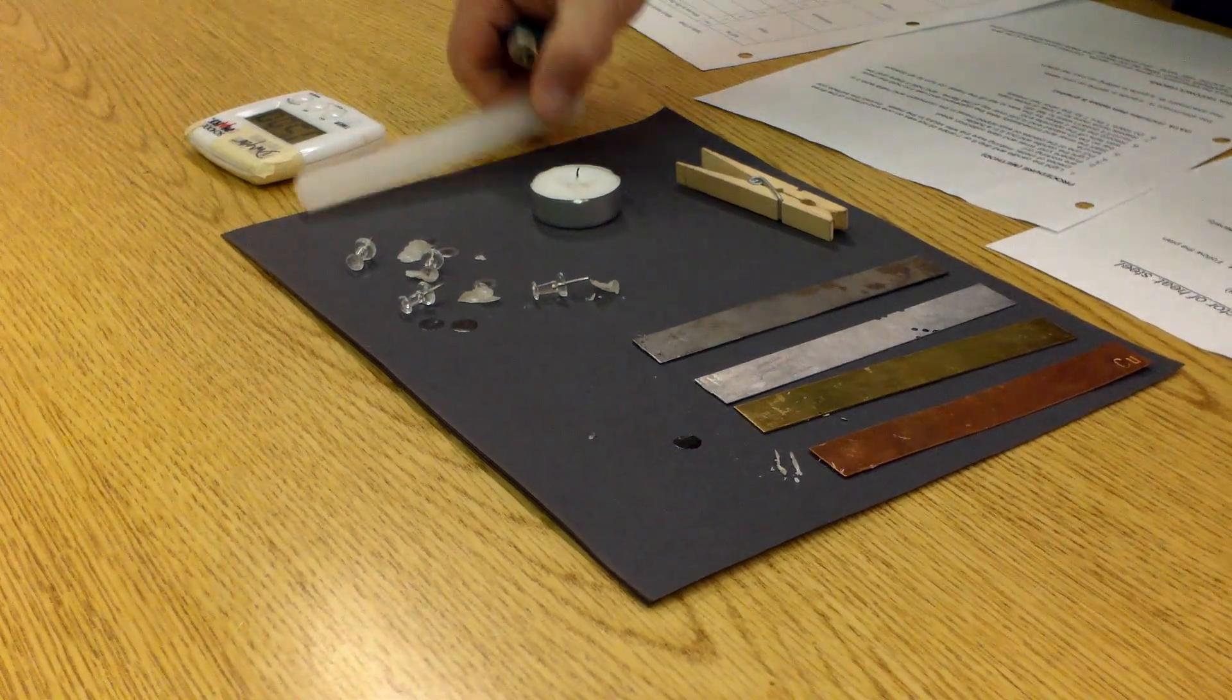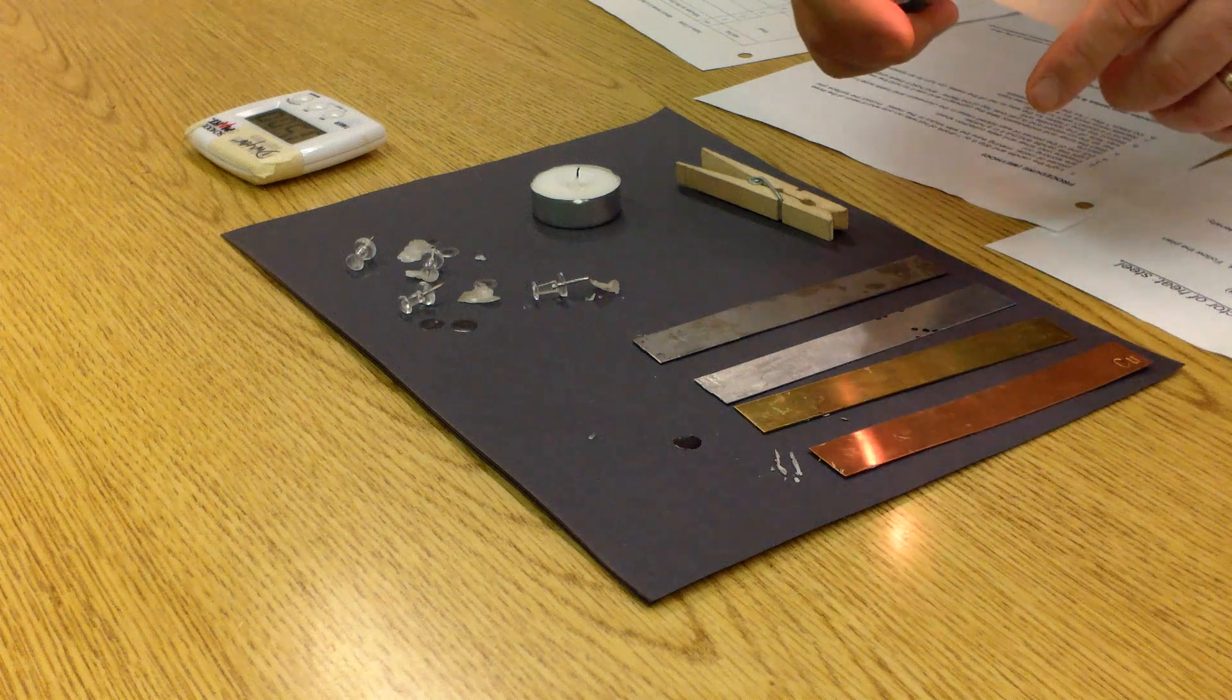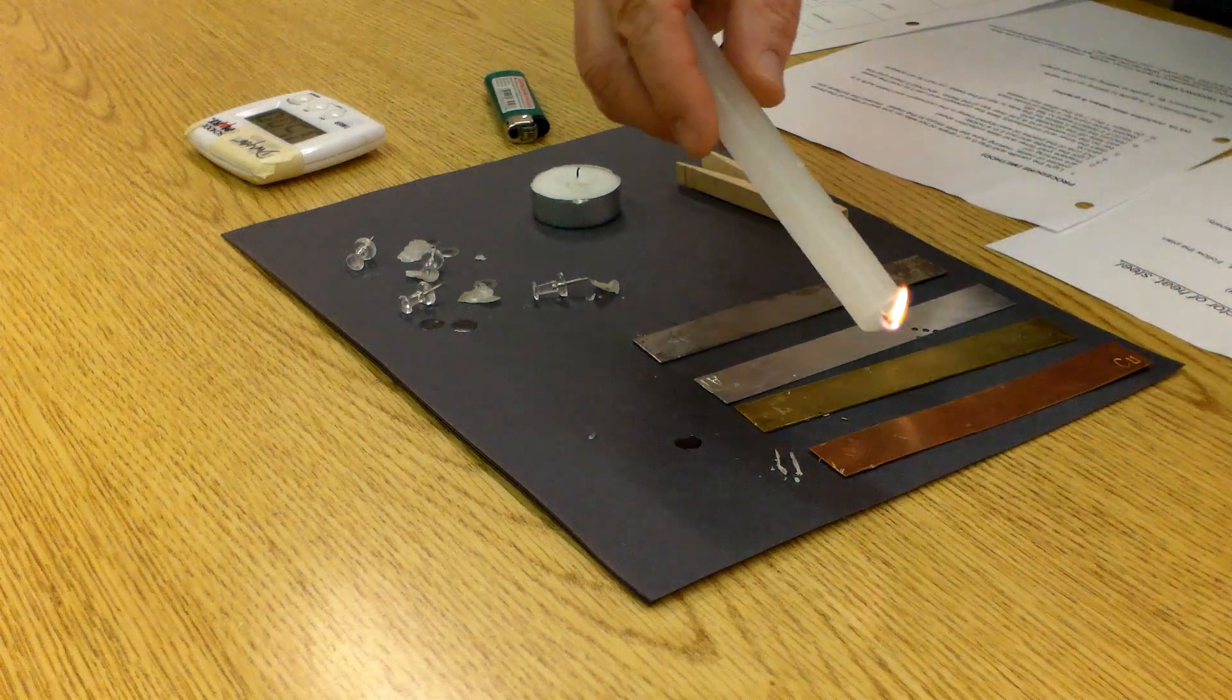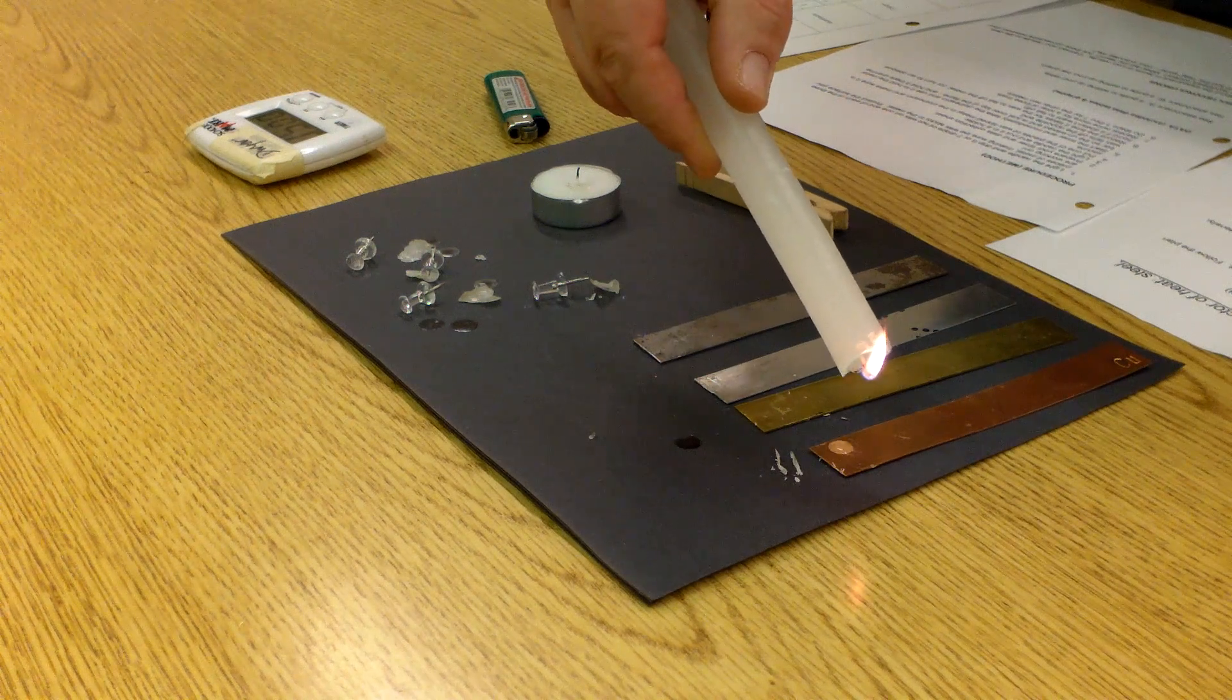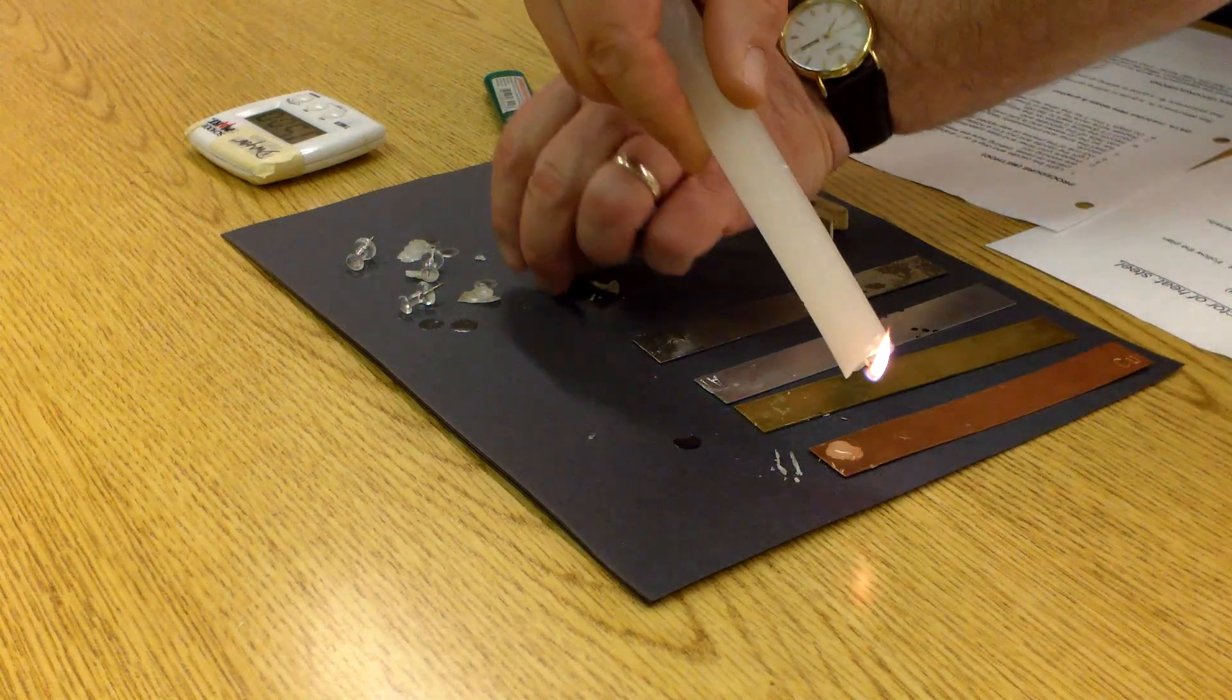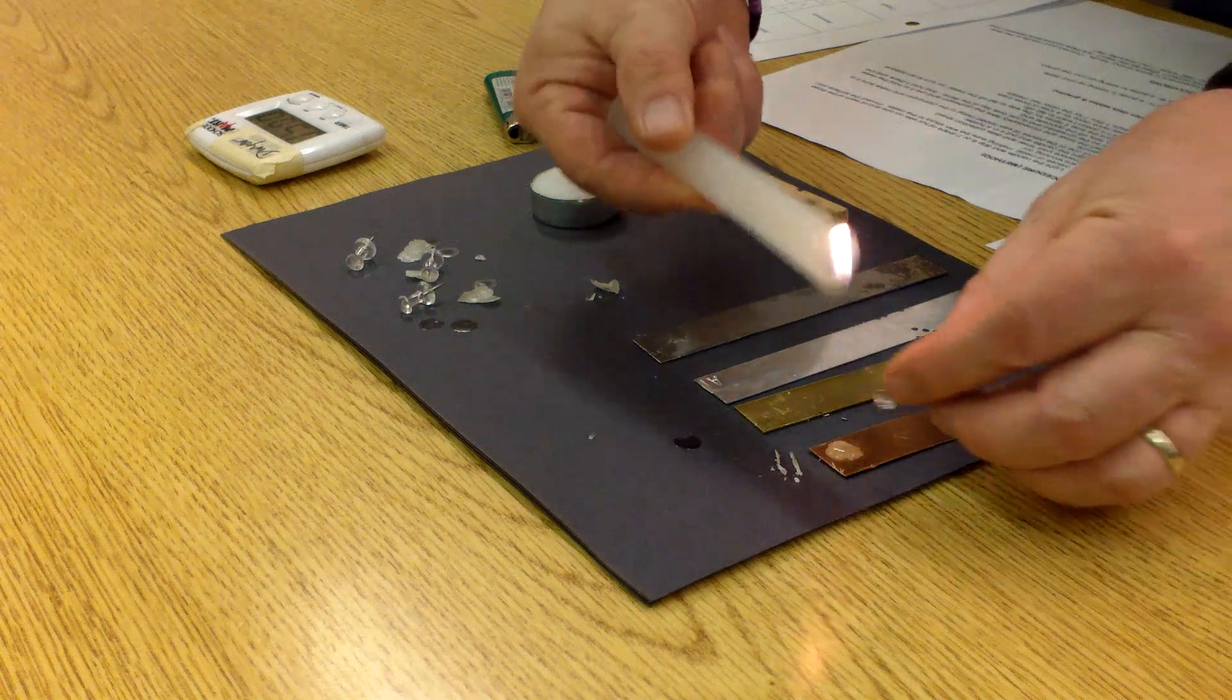So the first thing I'm going to do is drip some wax on the end of the bars using the candle. And I'm going to drip the wax and place the pushpin. I'm going to do this four times, one for each one.